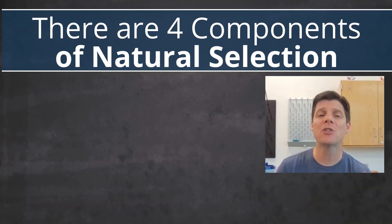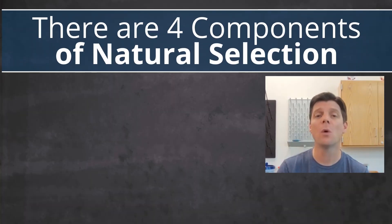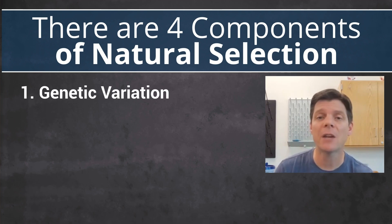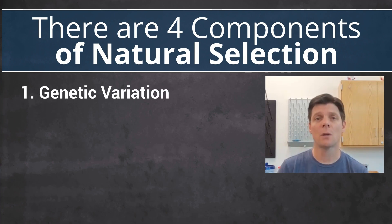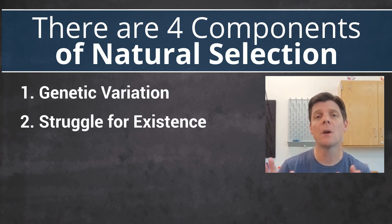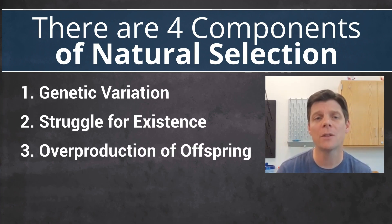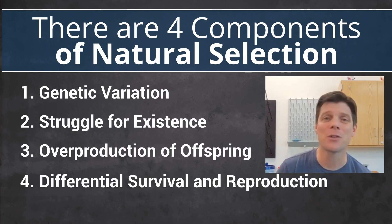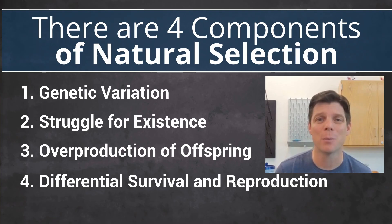Remember that natural selection consists of four components: genetic variation, struggle for existence, overproduction of offspring, and differential survival and reproduction.